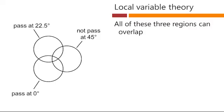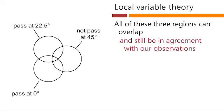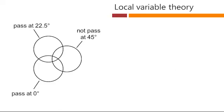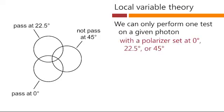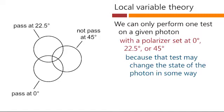All three regions can overlap, and that can still be in agreement with all of the observations we make. However, we can only perform one test on a given photon. So with one photon, we might find it's within one circle, but we have no information as to whether it is also in another region. With our one experiment with the polarizer set at 22 and a half degrees, the photon's hidden variable corresponds to some point inside that circle, but we don't know if it was also within another circle.